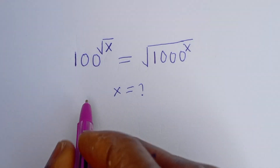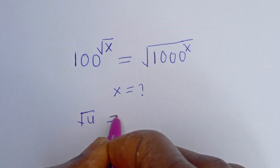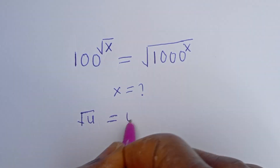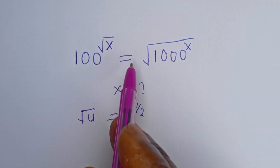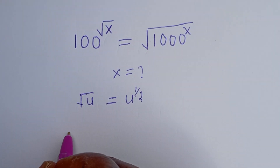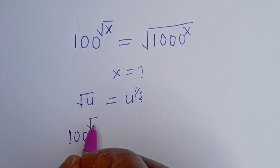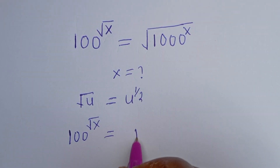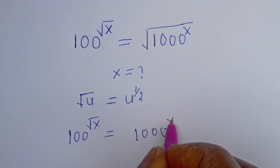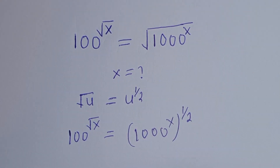Take note that the square root of u is equal to u to the power of one over two. So this can be written as: 100 to the power of square root of s is equal to 1000 to the power of s to the power of one over two.